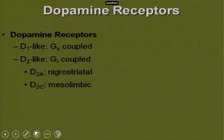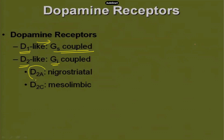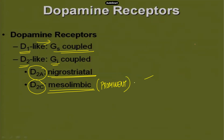Dopamine receptors are of the following types: D1 receptors, which are Gs-coupled, and D2 receptors, which are Gi-coupled. D2A receptors are present in the nigrostriatal pathway. D2C receptors are present in the mesocortical and mesolimbic pathways. D2C receptors become prominent when we deal with antipsychotics, because this is where most antipsychotics — for example, clozapine — work.